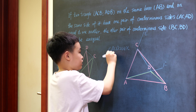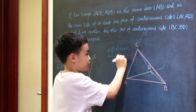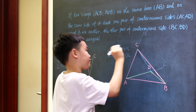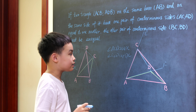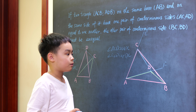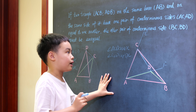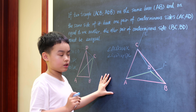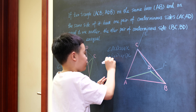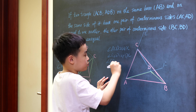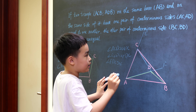It means angle ECD will be equal to angle FDC. Because angle ECD is bigger than angle BCD, and because ECD is equal to FDC, then angle FDC will also be greater than angle BCD.